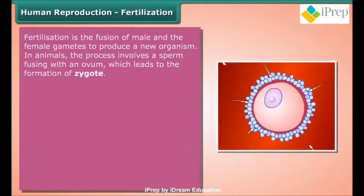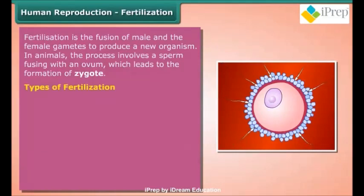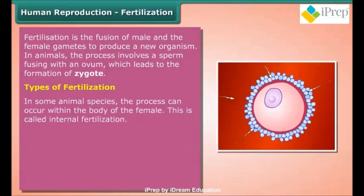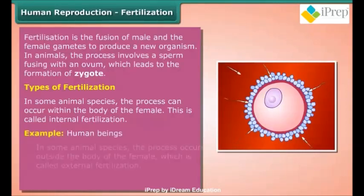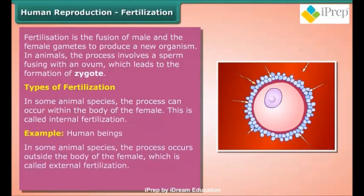Fertilization is the fusion of male and female gametes to produce a new organism. In animals, the process involves a sperm fusing with an ovum, which leads to the formation of a zygote. There are two types of fertilization: internal fertilization, where the process occurs within the body of the female (e.g., human beings), and external fertilization, where the process occurs outside the body of the female (e.g., frogs and fishes).